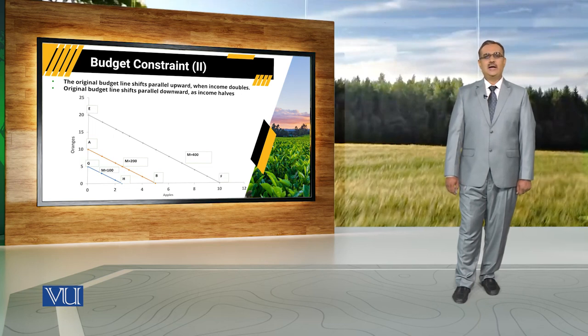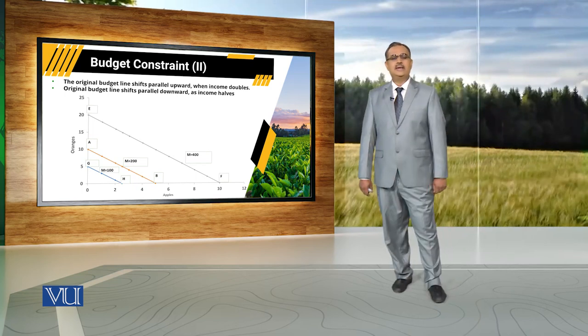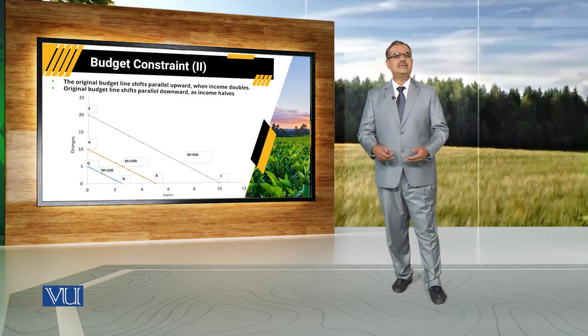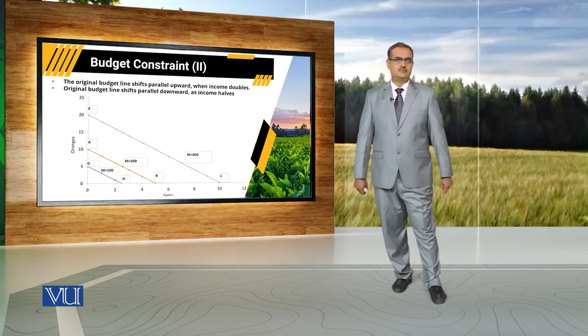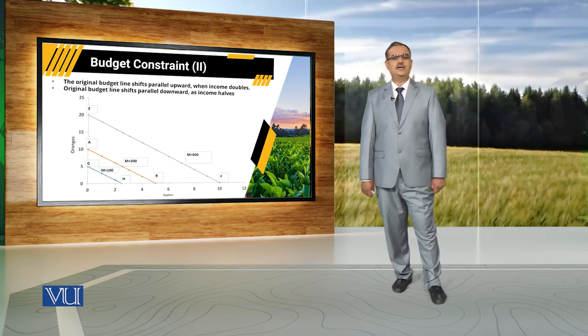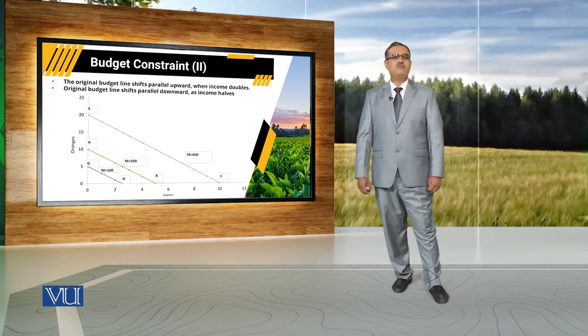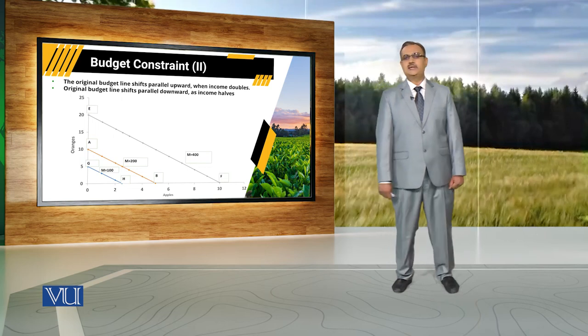Similarly, it might be possible that there is no change in income of the household, but a simultaneous decrease in the prices of both commodities. If prices of both apples and oranges reduce to half — initially price of apples is 40 and oranges is 20, but they become 20 and 10 respectively — there is a 50% reduction, and because of that, the budget line will also shift outward.